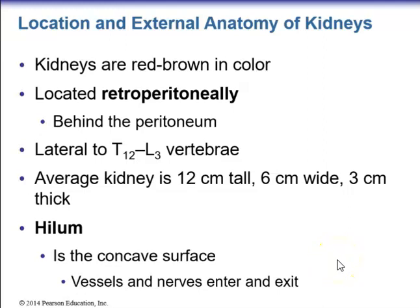Kidneys are red-brown in color and located retroperitoneally — behind the peritoneal cavity — lateral to vertebral levels T12 to L3. The average kidney is about 12 cm tall, 6 cm wide, and 3 cm thick.